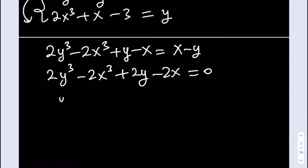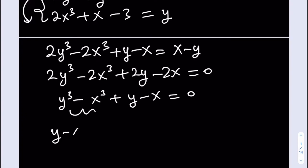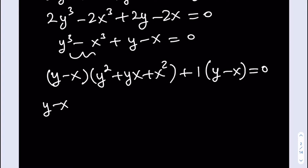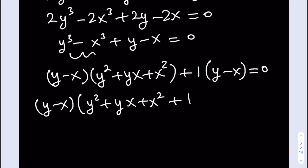I can divide everything by 2 to get a simpler equation. Now y³ - x³ is factorable — it's divisible by y - x, and I have a y - x, so I'll use factoring by grouping. Factoring the difference of two cubes gives (y - x)(y² + yx + x²), plus 1 times (y - x). Pulling out (y - x) as a common factor, I get (y - x)(y² + yx + x² + 1) = 0.